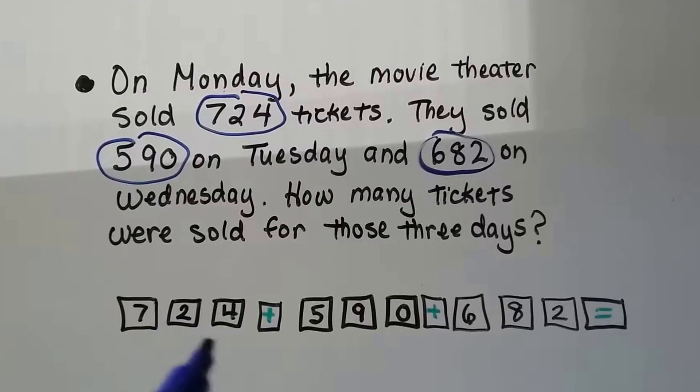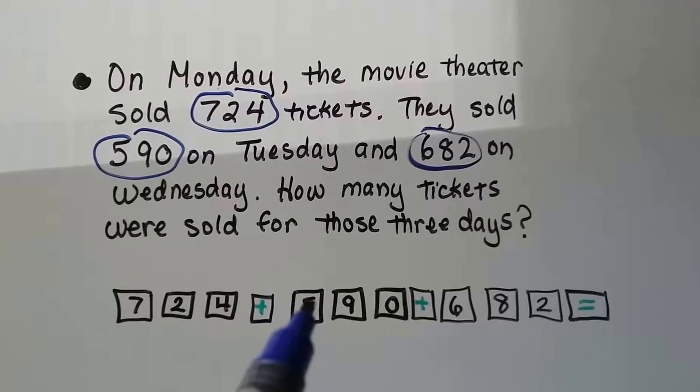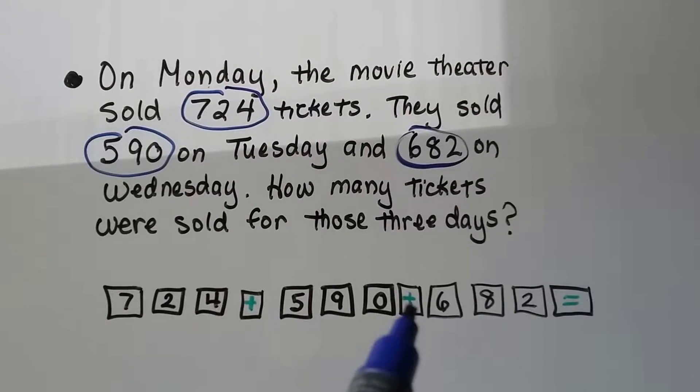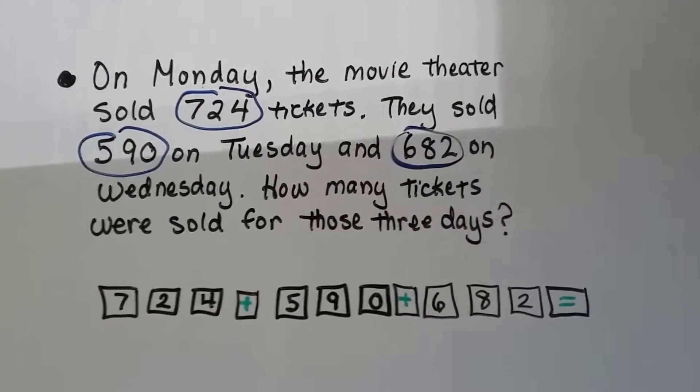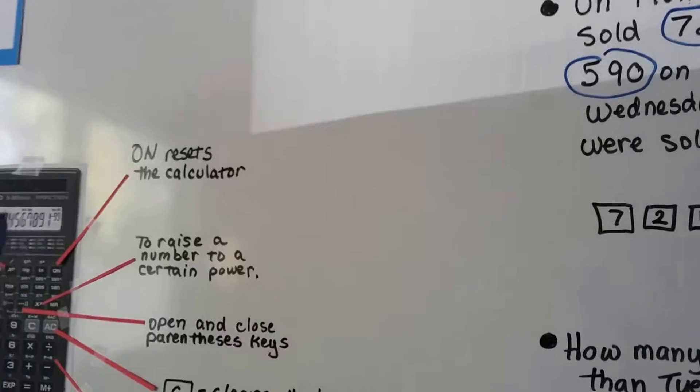So we're going to put in a 7, a 2, and a 4, and the plus sign, the 5, the 9, the 0, and a plus sign, the 6, the 8, the 2, and an equal sign, and our answer will show up on the window right here of the calculator on the screen.